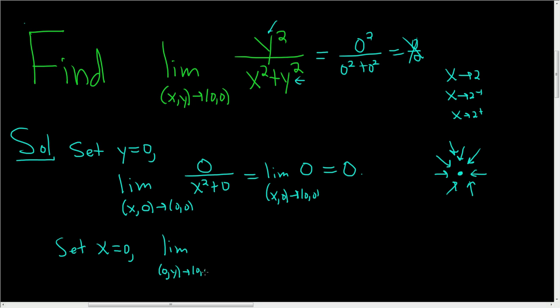So approaching (0,0), and now we're setting x equal to 0. So we literally just replace x with 0. So we have y squared over 0 plus y squared.